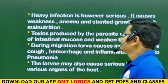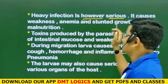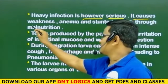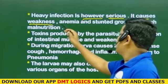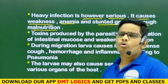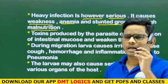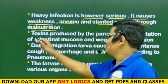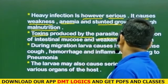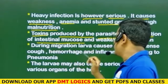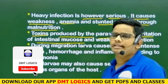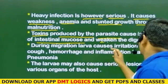Pathogenicity includes anemia and stunted growth through malnutrition. Toxins produced by the parasite cause irritation of the intestinal mucosa, leading to weakened digestion.